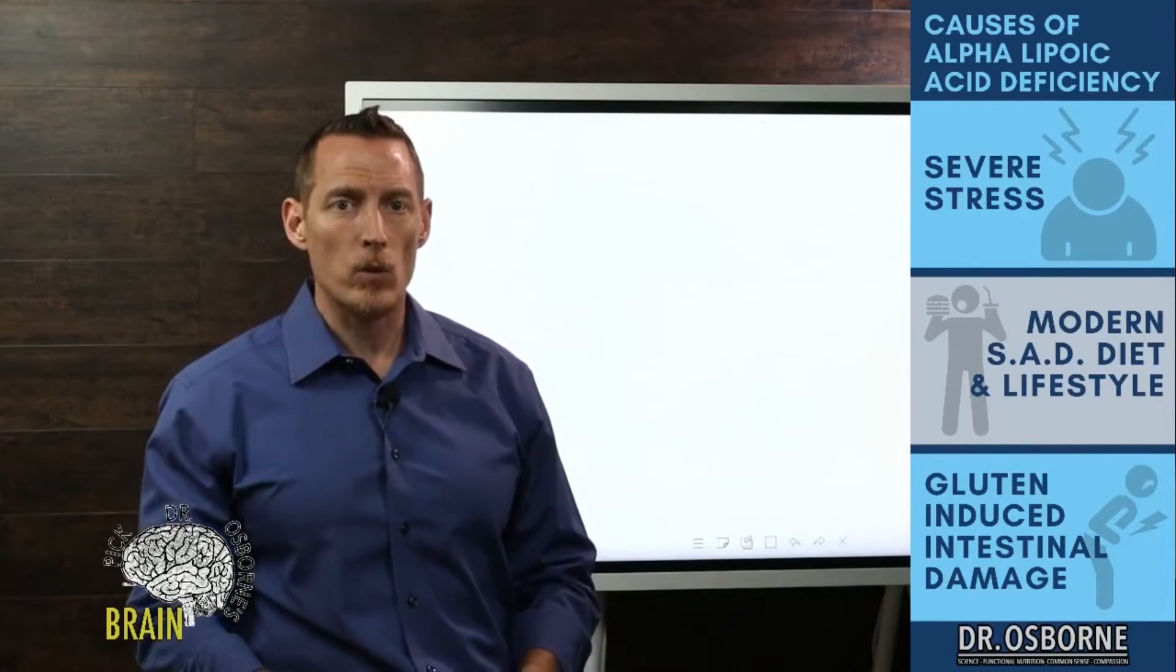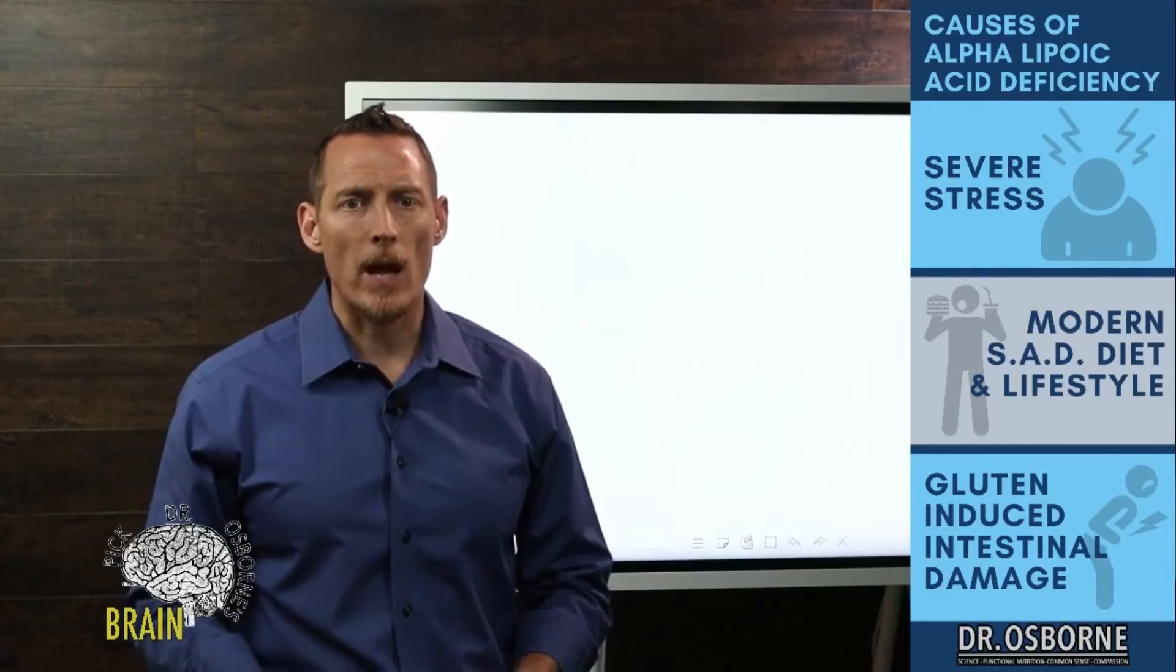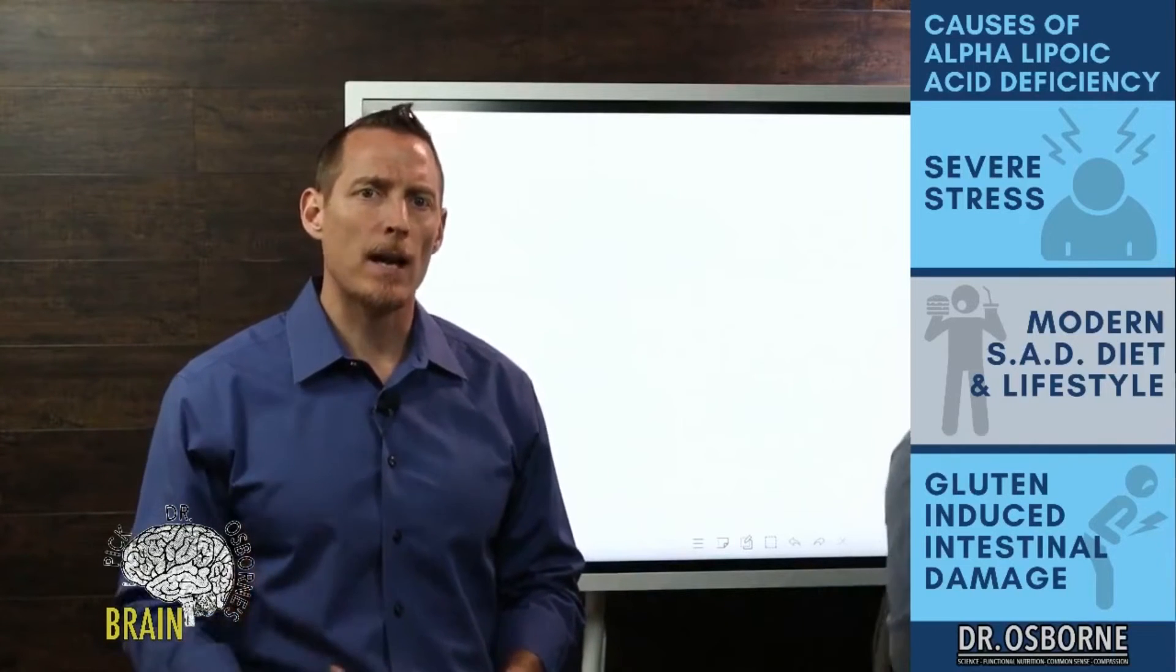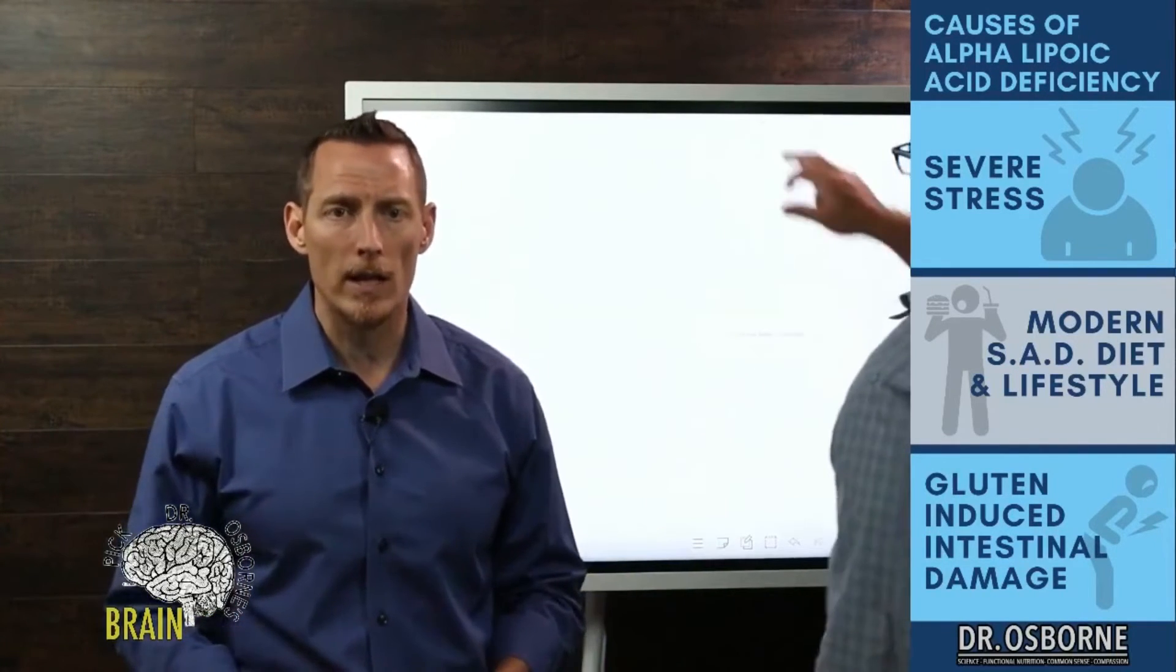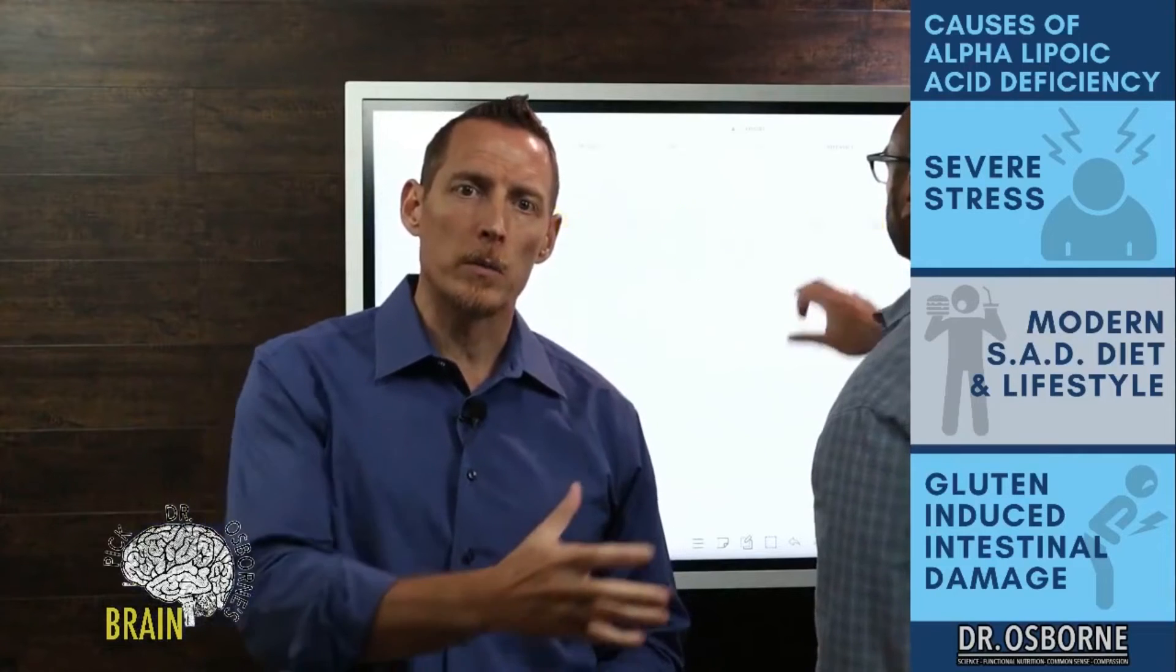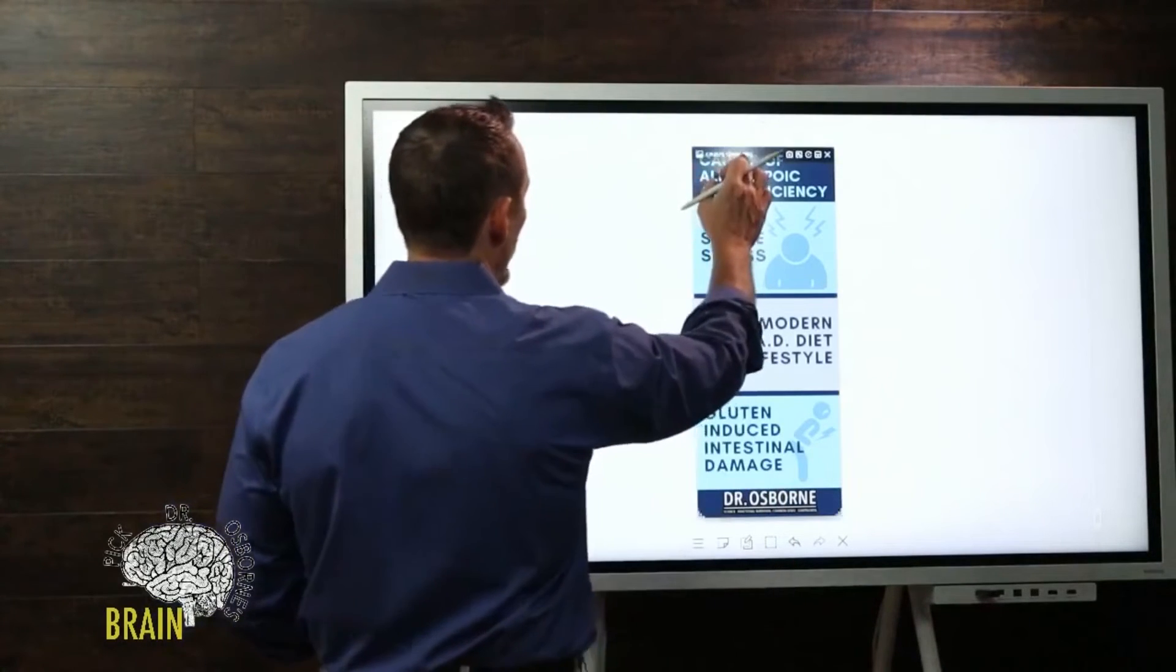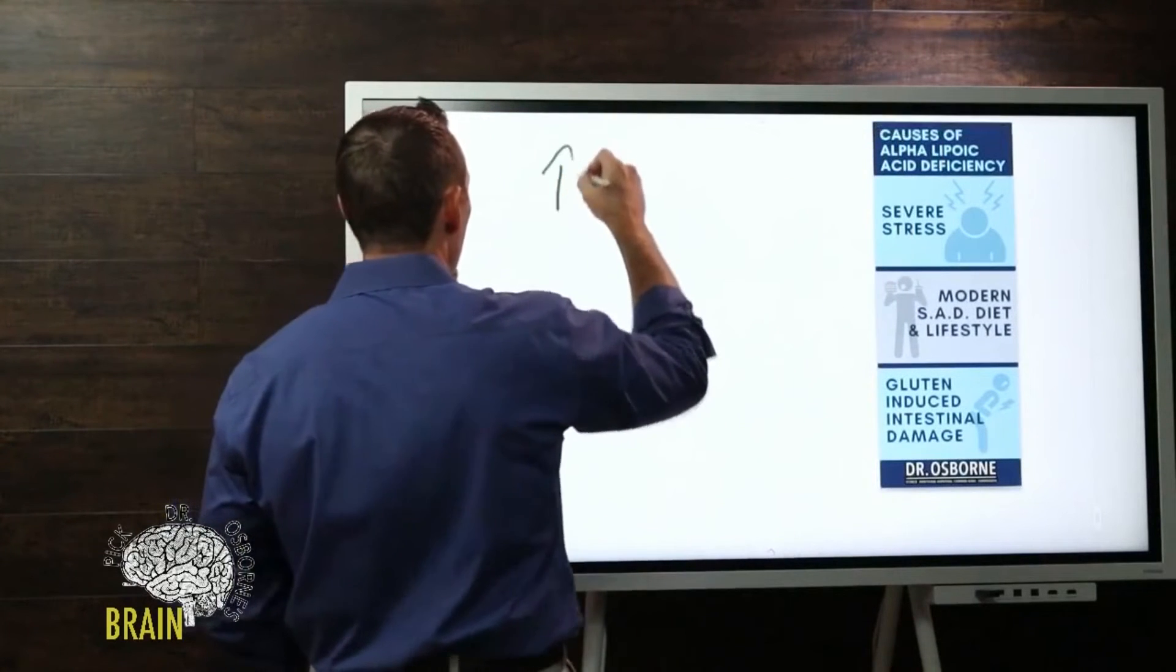When you have an increased sugar load in the blood consistently over time, that's going to drain the nutrients necessary to help you metabolize that sugar, to get rid of it, to properly utilize it. We're talking about alpha lipoic acid - it's one of the nutrients necessary to help glucose get inside your cell. But we've got other nutrients that are also going to be depleted as a result: zinc deficiency can occur, chromium deficiency, vitamin B3 deficiency, magnesium deficiency, vitamin D deficiency.